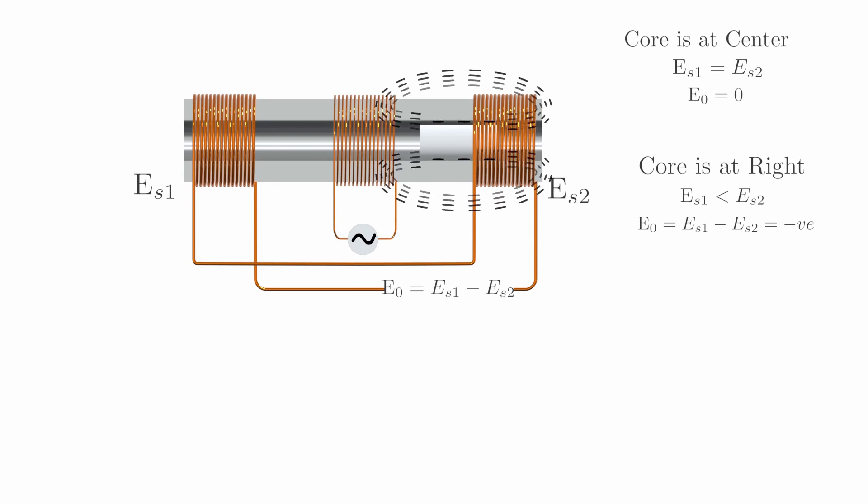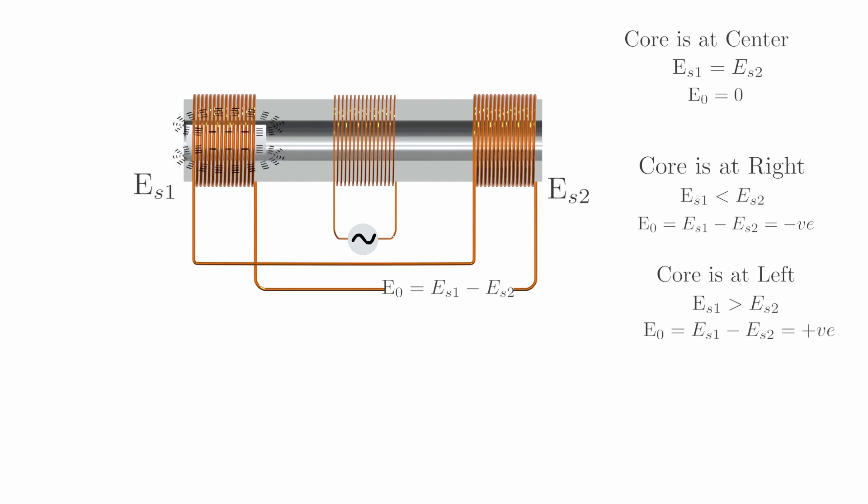Conversely, if we move the core towards the left, the flux linking with S1 becomes greater than the flux linking with S2, causing a positive net EMF.